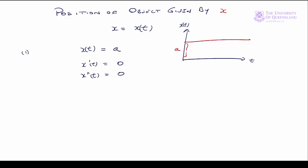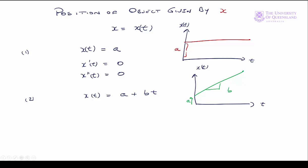In our second case, we have an object moving at constant velocity. So x of t is equal to a plus bt. The graph will have intercept a and slope equal to b. The first derivative x prime of t is equal to b — a constant slope. The velocity of the object doesn't depend on time. The second derivative, differentiating x prime of t, equals zero. So x prime of t, the first derivative, isn't changing — we have a constant slope.